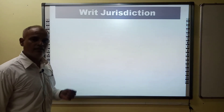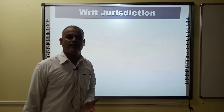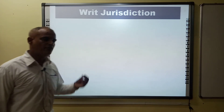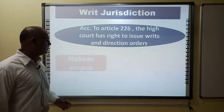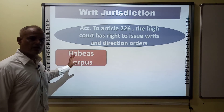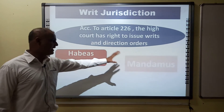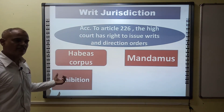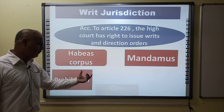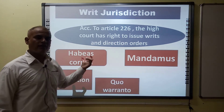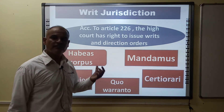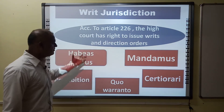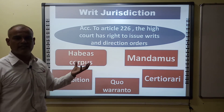For the protection of fundamental rights, the High Court can issue the following writs: first is Habeas Corpus; second is Mandamus; third is Prohibition; fourth is Certiorari; and fifth is Quo Warranto. These writs are the same as those issued by the Supreme Court.